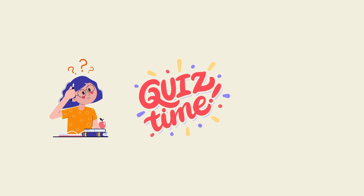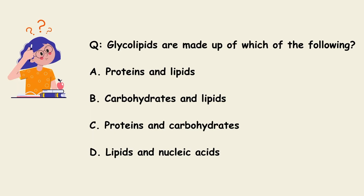Now let us test your knowledge. First question: glycolipids are made up of which of the following? A. Protein and lipid. B. Carbohydrates and lipids. C. Proteins and carbohydrates. D. Lipids and nucleic acids. The correct answer for this question is B. Glycolipids are made up of carbohydrates and lipids.